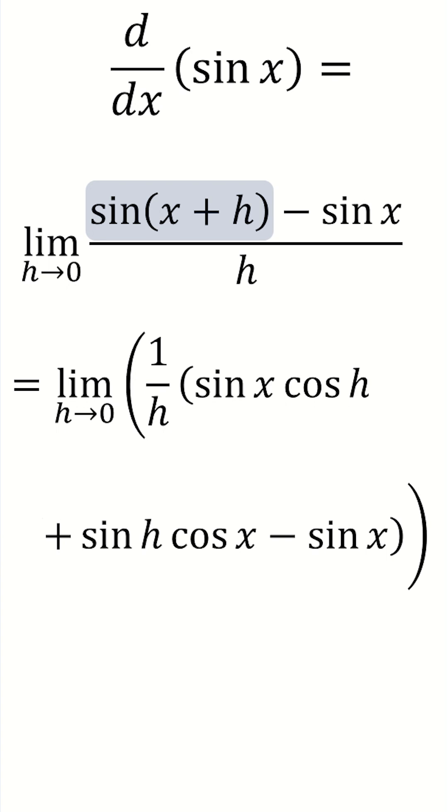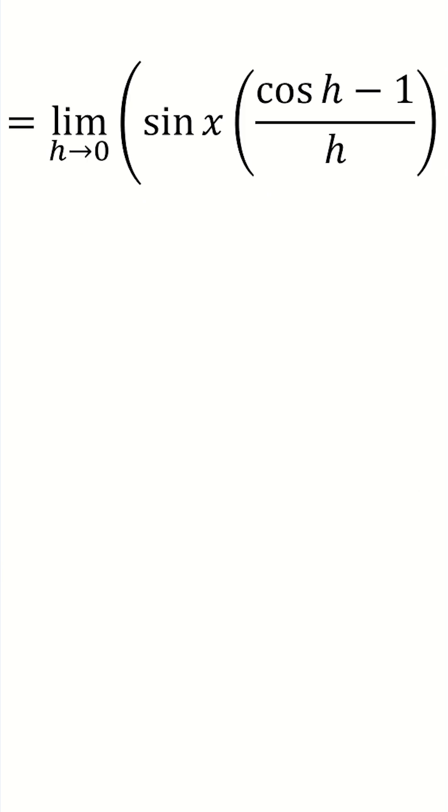And then we can realize that we can factorise sine of x out of this term and this term, which means we can then rewrite it as limit as h tends towards zero of sine of x, lots of cos of h minus 1 all over h, and then we still have the other term to include as well.